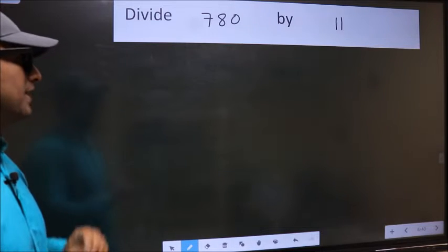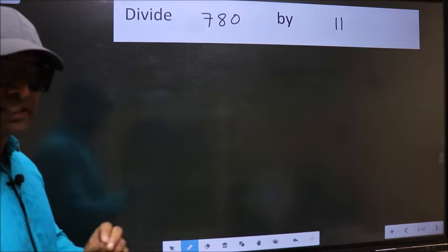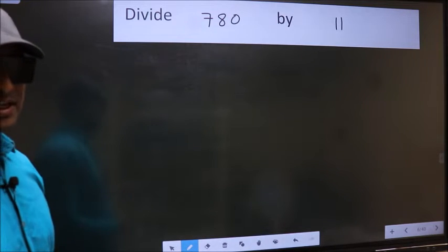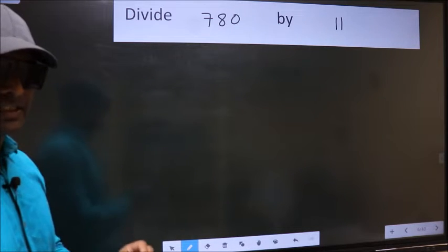Divide 780 by 11. While doing this division, many make a mistake. What is the mistake that they make? I will let you know, but before that, we should frame it in this way.